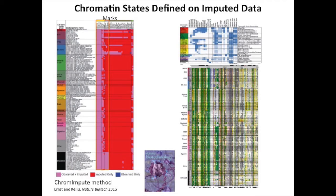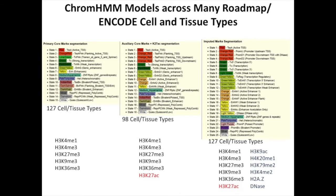This is a screenshot of one location across 127 cell types for these 25 states. And this is a screenshot of the labels of these states available on the UCSC genome browser summarizing the three different models, the inputs they're defined based on, and the candidate annotations associated with these states.